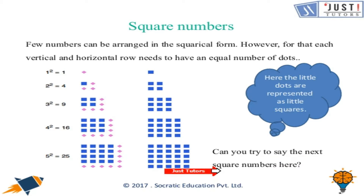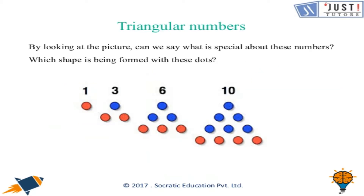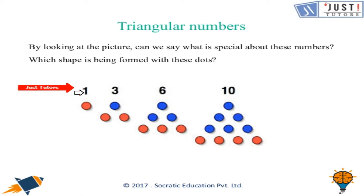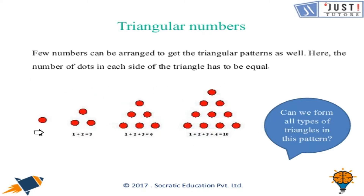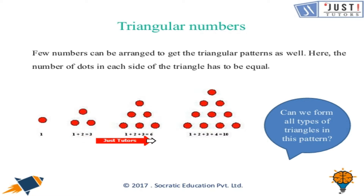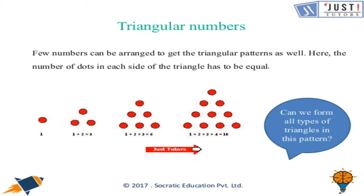Can you find the next three square numbers? Now let's look at triangular numbers. The numbers 1, 3, 6, and 10 are all triangular numbers. For the first, you have 1. Then 1 plus 2 equals 3. Then 1 plus 2 plus 3 equals 6. Then 1 plus 2 plus 3 plus 4 equals 10. The next triangular number is 15 — that is 1 plus 2 plus 3 plus 4 plus 5.